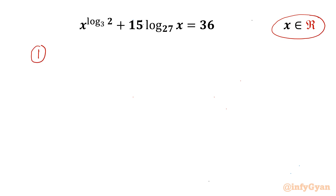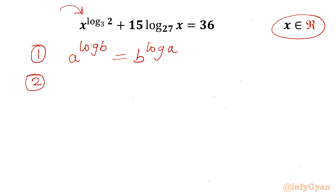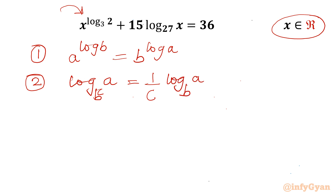I will begin with two logarithmic properties. The first one is a power log b — anytime we can write this as b power log a. This property we will use here. Property number 2: log a with base b power c, we can write equal to 1 over c times log a with base b, which I will apply here.